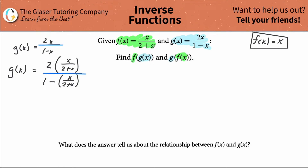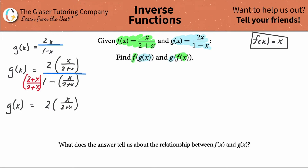I'm going to try to simplify this. In the denominator there's a subtraction, so I need common denominators. I multiply the one by two plus x over two plus x. So g of x equals two times x over two plus x, all over two plus x over two plus x, minus x over two plus x.